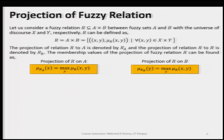Let us consider a fuzzy relation represented by capital R. This R is a subset of, or equal to, the Cartesian product of fuzzy sets A and B. That means R is either a subset of A cross B, or R is equal to the Cartesian product A cross B. Here, A is defined in the universe of discourse X and B is defined in the universe of discourse Y.